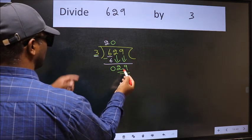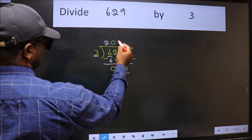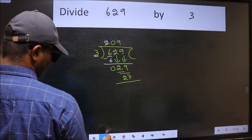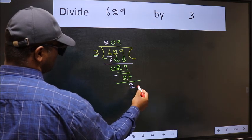A number close to 29 in 3 table is 3 nines 27. Now we should subtract. We get 2.